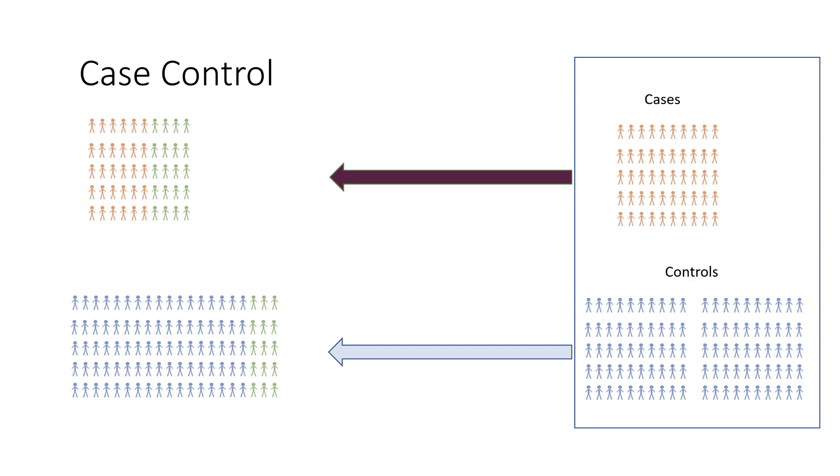In a cohort study, you can calculate the probability of outcome given exposure. But in a case control study, what we're left with is the probability of exposure given outcome. And that's not the same thing.